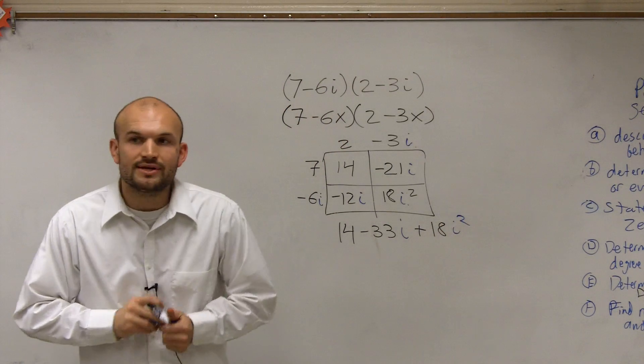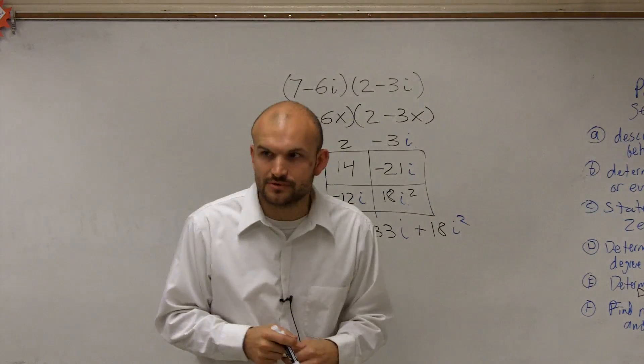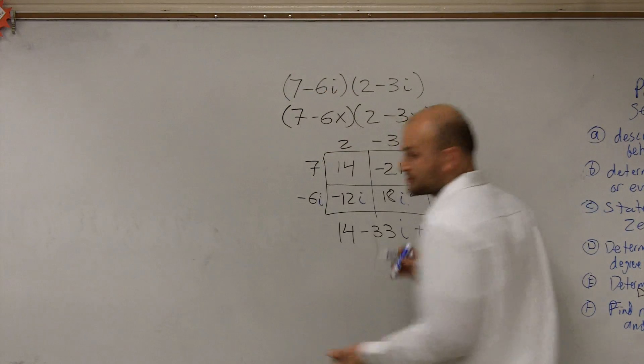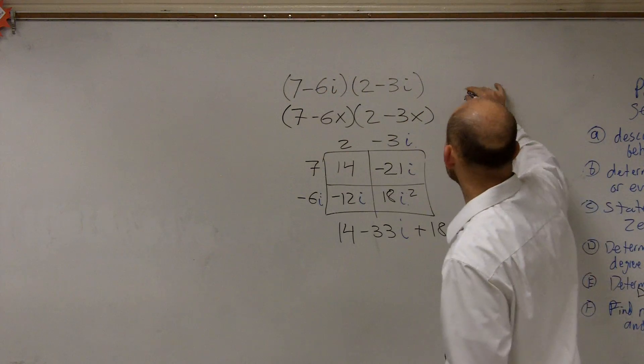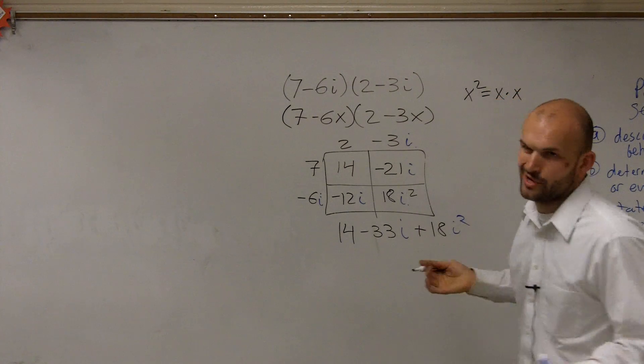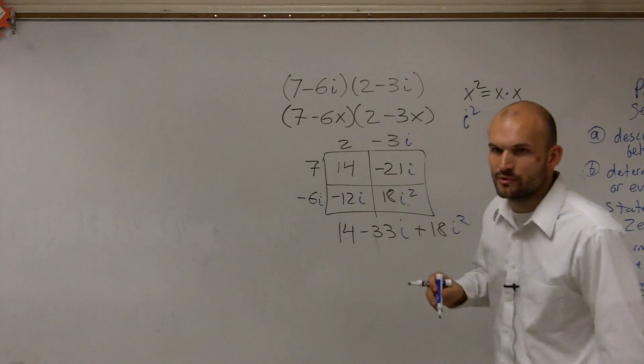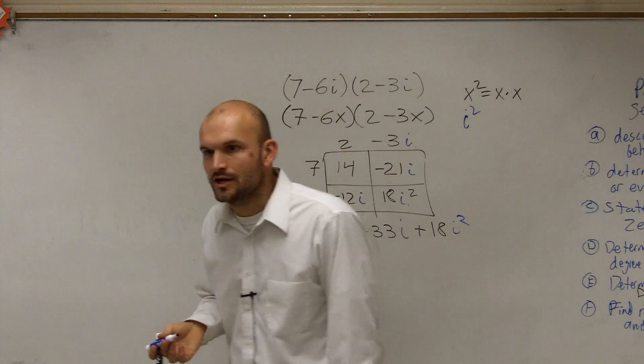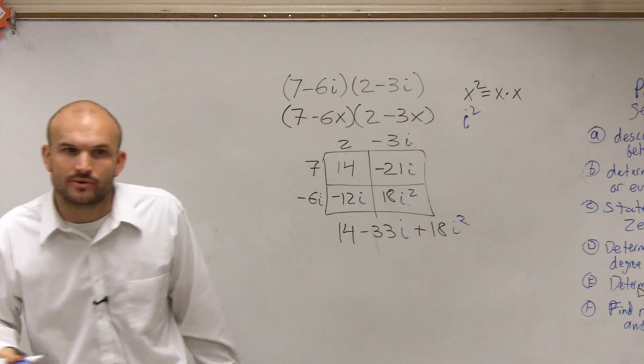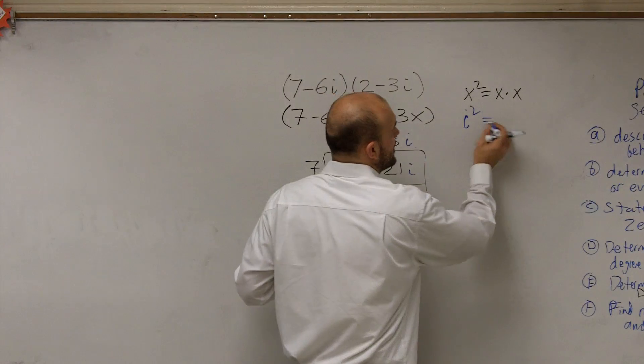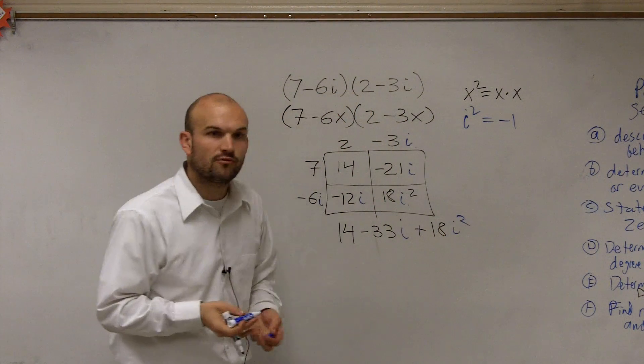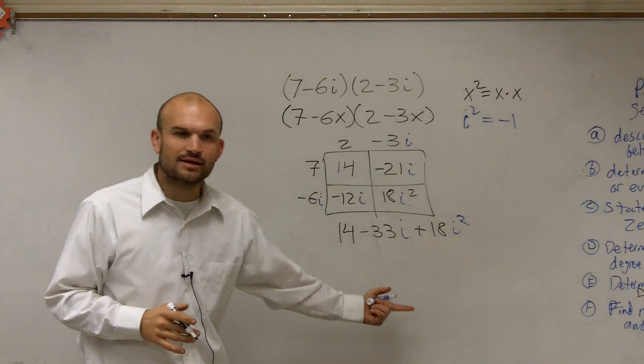And now, here's the big difference that we get into with this point. Because x squared, we know just deals with this. x squared equals x times x, right? That's where x squared comes from. But when we're talking about i squared, we're not talking about the variable i. We're talking about the imaginary number i squared. And we wrote out that i squared equals negative 1.